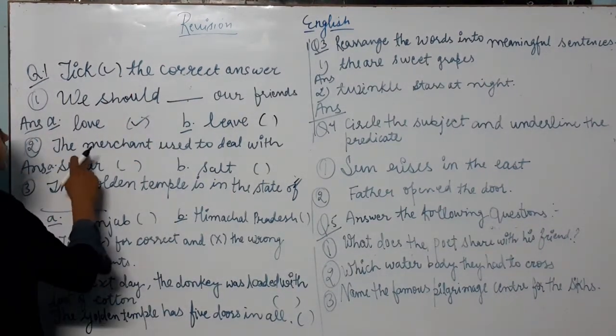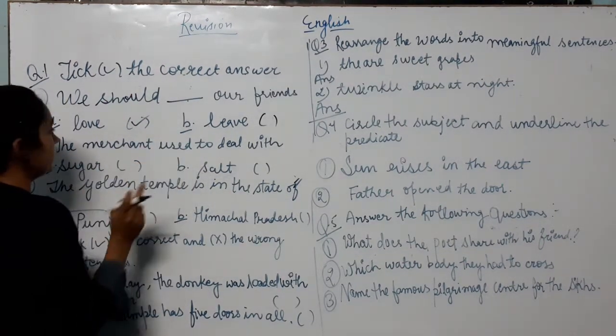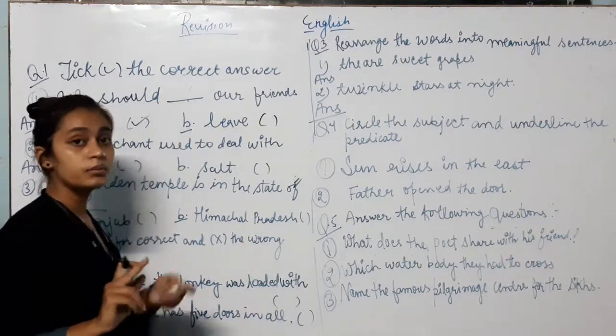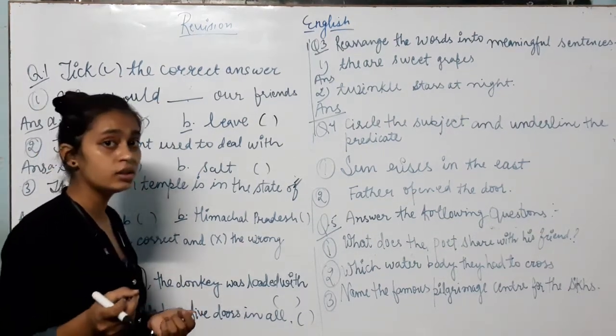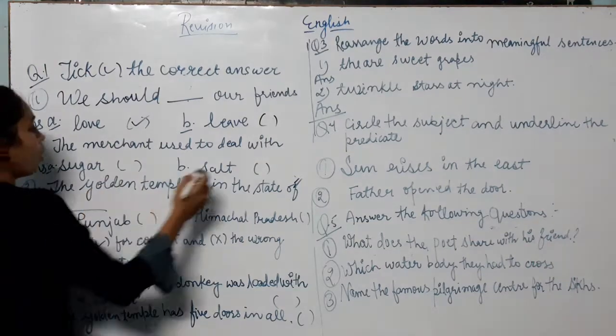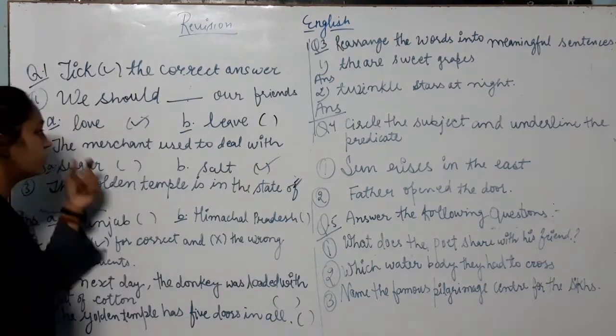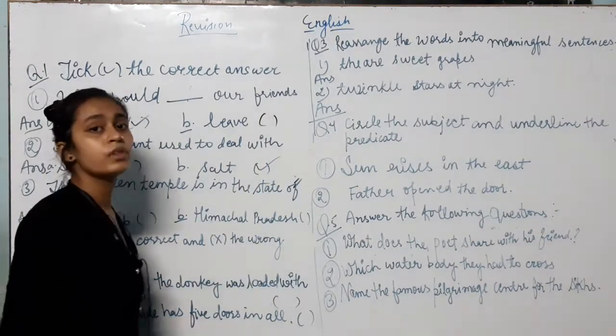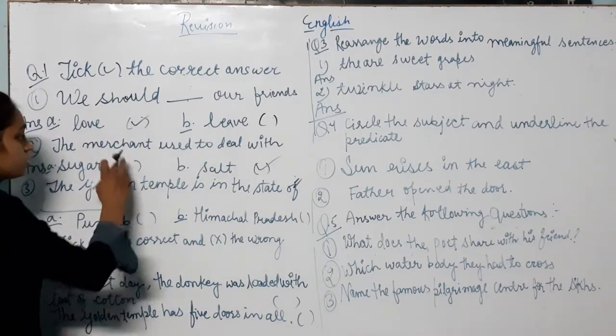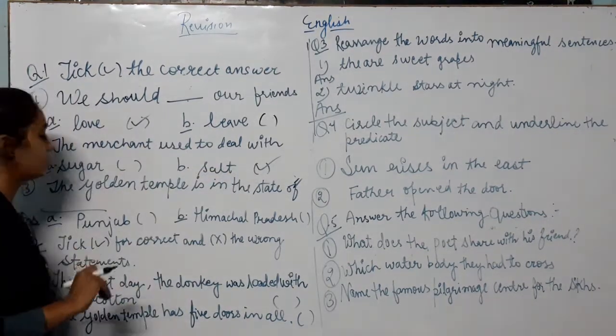Second one is the merchant used to deal with. In the second chapter, the merchant used to deal with, the merchant was salt. The merchant was working of the salt business. The merchant used to deal with salt.